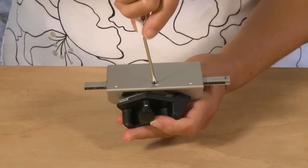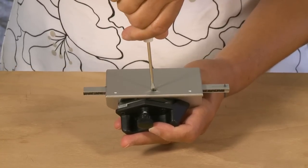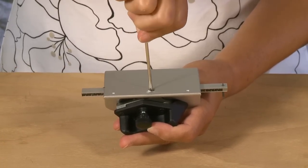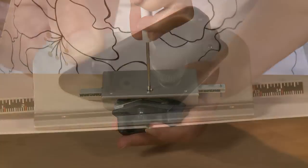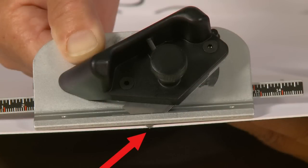Using a screwdriver, turn the screw clockwise to decrease the blade depth, or counterclockwise to increase the blade depth. See that the blade depth is set so the blade barely passes through the mat board and only scores into your slip sheet.